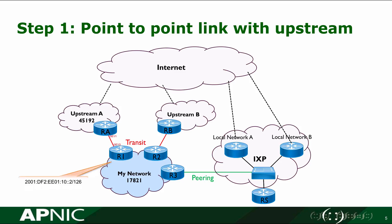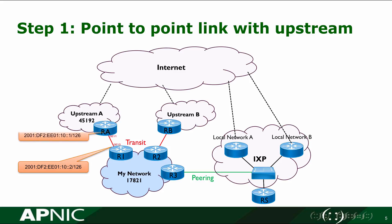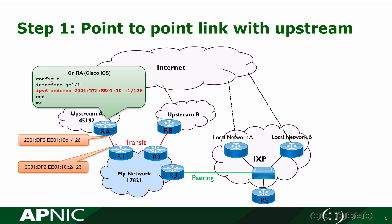I would see the IP addresses on R1's GE 1.3 interface. The IP address is 2001:df2:ee01:10::2:126. On the other side, the upstream will use the 2.1 address in the same subnet. In most cases these IP addresses are provided by the upstream ISP, and the upstream router's configuration would be done by the upstream ISPs.